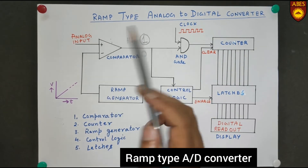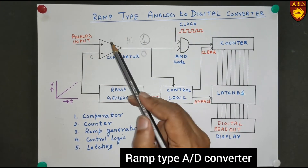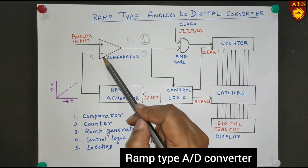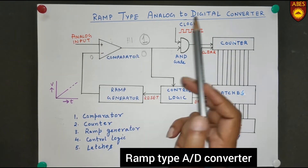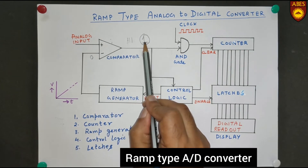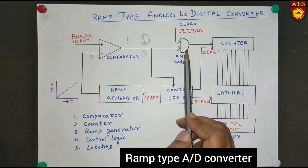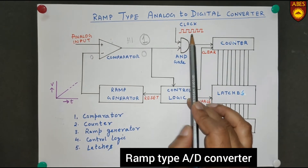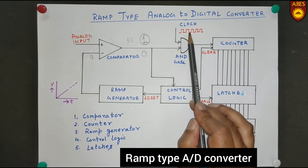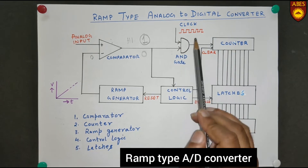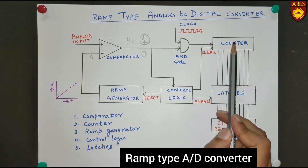Initially, when you give the analog input signal, the negative terminal input is 0 and the Comparator compares both signals. Since the analog input is higher, the Comparator gives a high output. This high output is given to an AND gate whose second input is the clock pulse. As long as this 1 is present, the clock pulse passes through the AND gate and the counter starts counting.